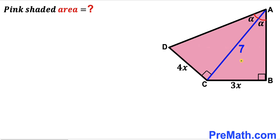Welcome to pre-math. In this video we have got these two right triangles ABC and this other right triangle ACD put together as you can see in this given diagram, such that this angle BAC and this angle CAD are congruent.